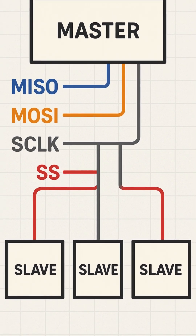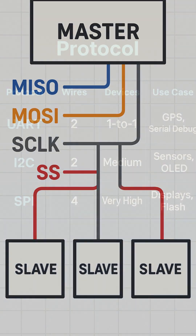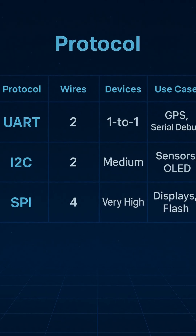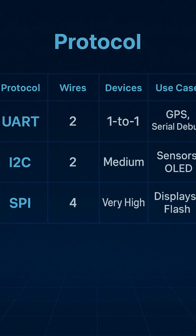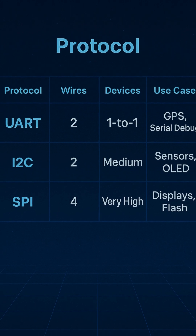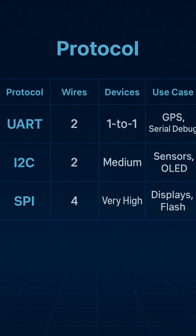Finally, SPI — Serial Peripheral Interface. It's faster than I2C but uses four wires: MOSI, MISO, SCLK, and SS. Great for speed-critical devices like displays or memory chips. So: UART is basic and reliable, I2C is versatile, and SPI is lightning fast. Your choice depends on what you're building.